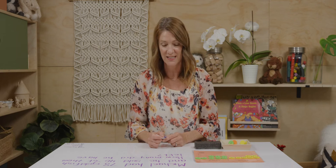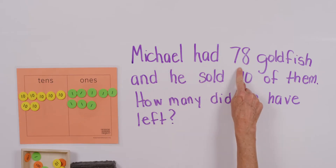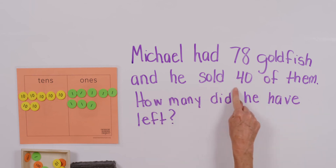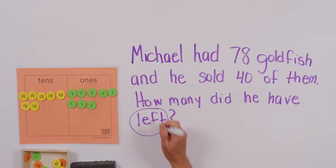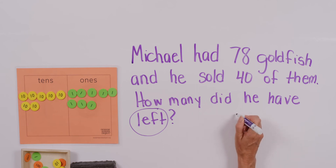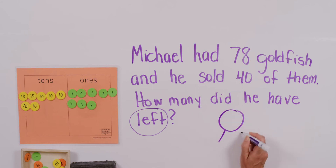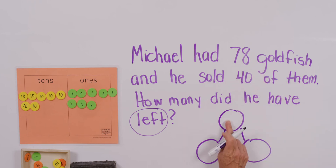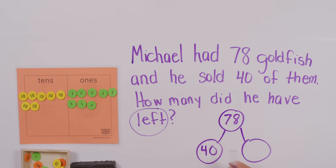Let's read this story together: Michael had 78 goldfish and he sold 40 of them. How many did he have left? In your textbook there's an answer statement: he had blank left. The word 'left' is a helpful clue — are we looking for the part or the whole? Let's use a number bond. Do you think 78 or 40 should go in the top part? 78 is bigger, so that's a good idea. If I put 40 down here, we're looking for the other part.